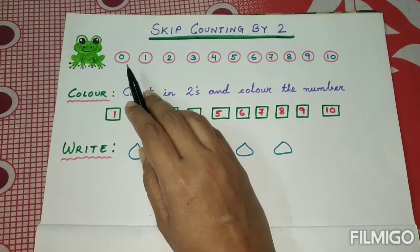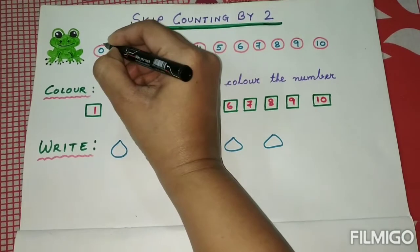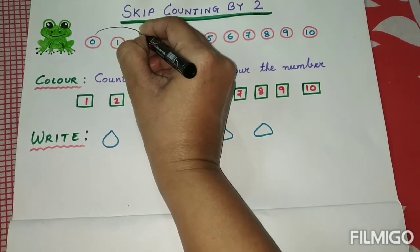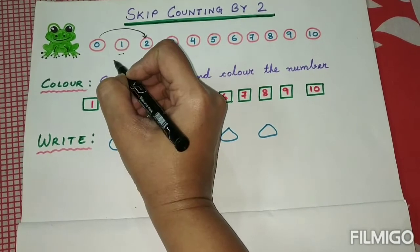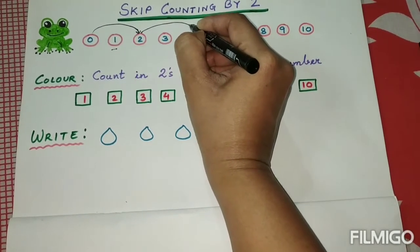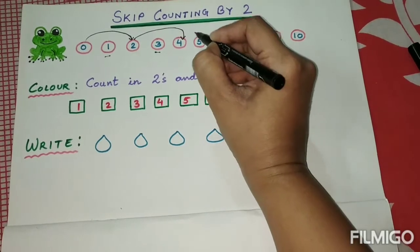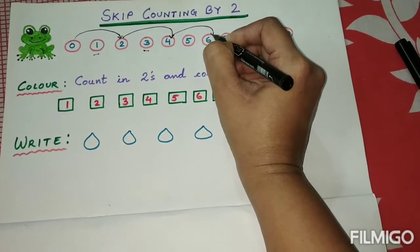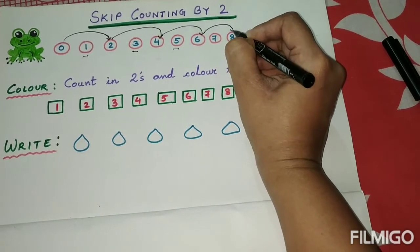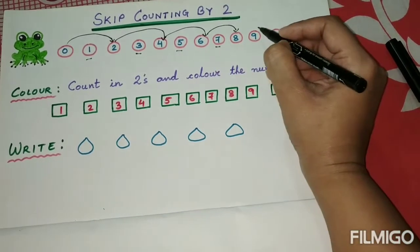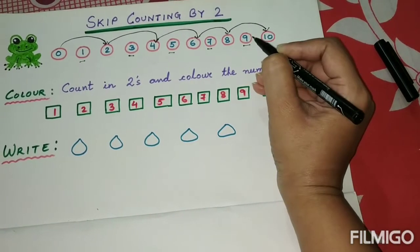The first number is zero. We will help the frog jump from zero to two, skipping number one. Again from two, we will skip to number four, skipping number three. From number four we will go to number six, skipping number five. From number six we will go to number eight, skipping number seven.